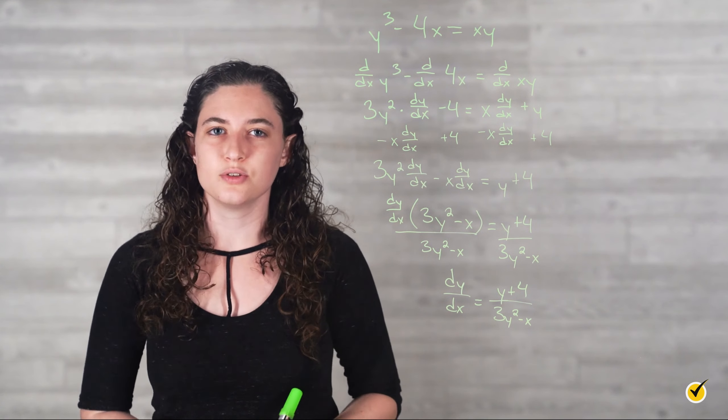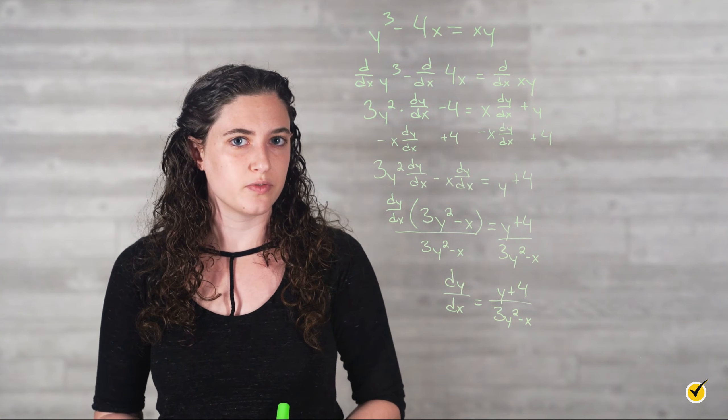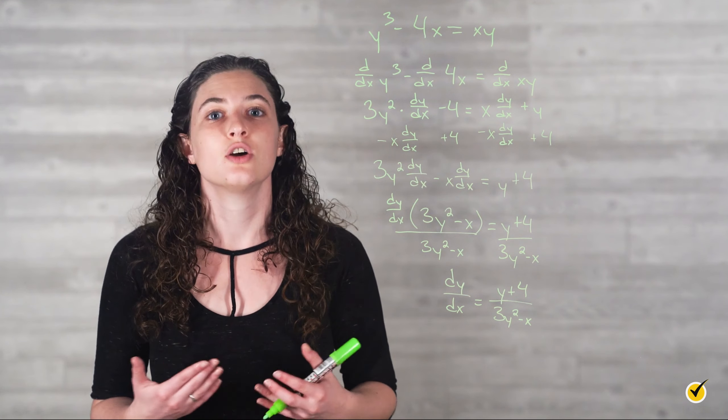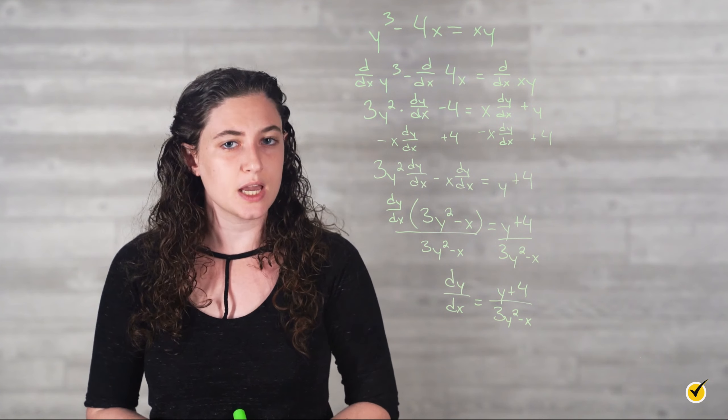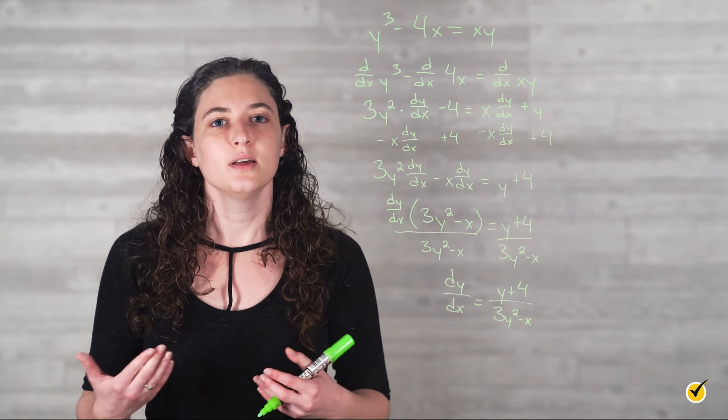You may have noticed that both solutions in this lesson so far have included the letter y in the derivative. This is nothing to be worried about and is just a consequence of how implicit differentiation works. Rest assured, as long as you follow the three steps properly and remember the chain rule where applicable, you'll be on the right track. Let's work through one more example: use implicit differentiation to find dy over dx for the relation sine of y squared is equal to 5x squared plus y.